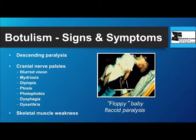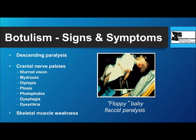What you see is a descending paralysis. The cranial nerves are affected first: blurred vision, double vision, droopy eyelids, trouble swallowing and speaking. Then this moves down the body, causing weakness in skeletal muscles. Eventually, this can affect the diaphragm and cause respiratory paralysis. The photograph shows a baby with infant botulism — there is no muscle tone; this is a so-called floppy baby, a flaccid paralysis as a result of botulism.